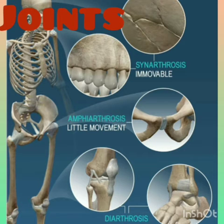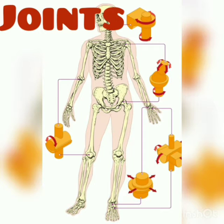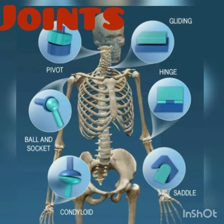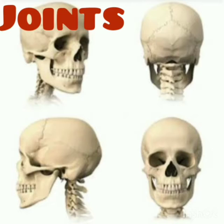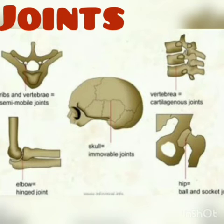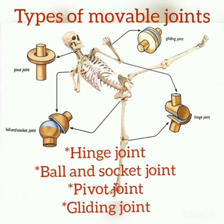Joints. In our daily lives we bend, turn or twist. Our joints help us to carry out these actions. A joint is a place where two bones are joined together. Bones can bend at the joints which causes movement in our body. The bones are joined by strong elastic bands of tissues called ligaments. There are two main types of joints: movable joints, where the bones can move, and immovable joints, where the bones cannot move.